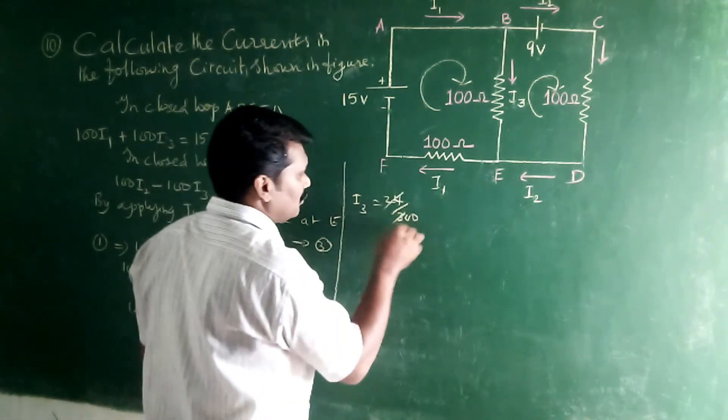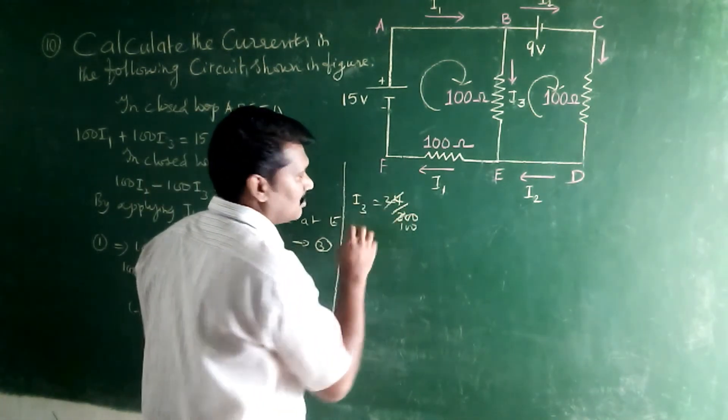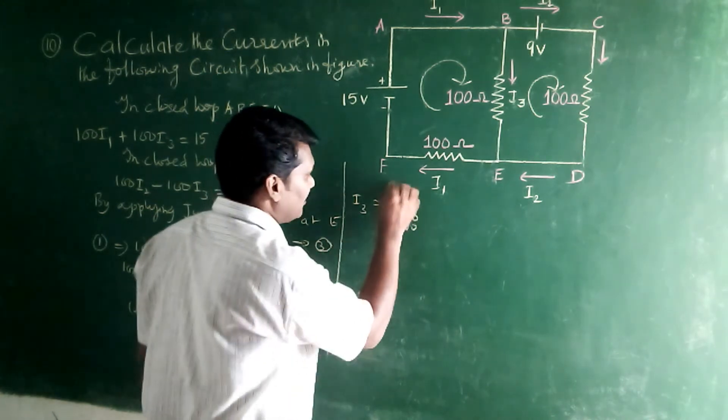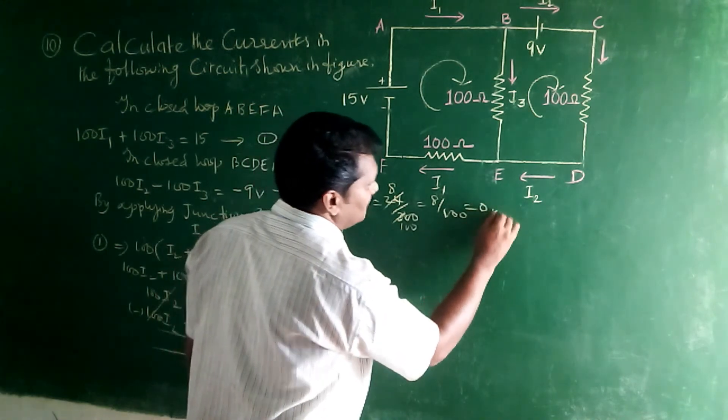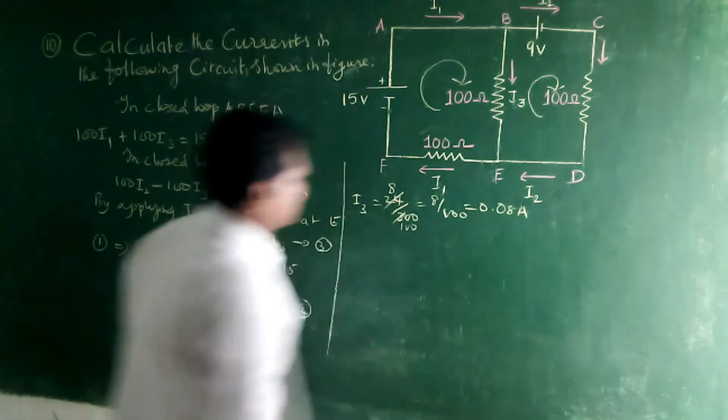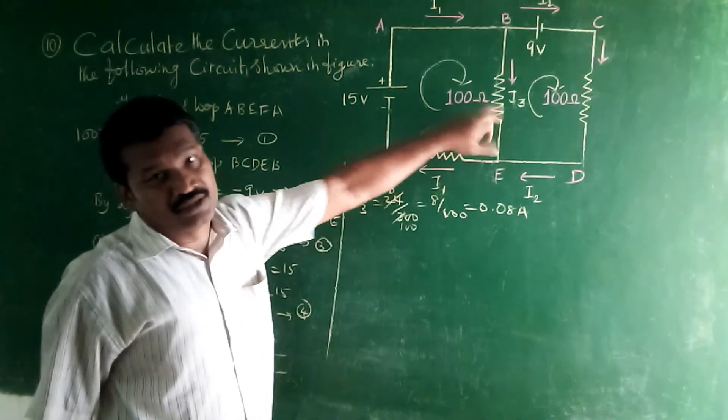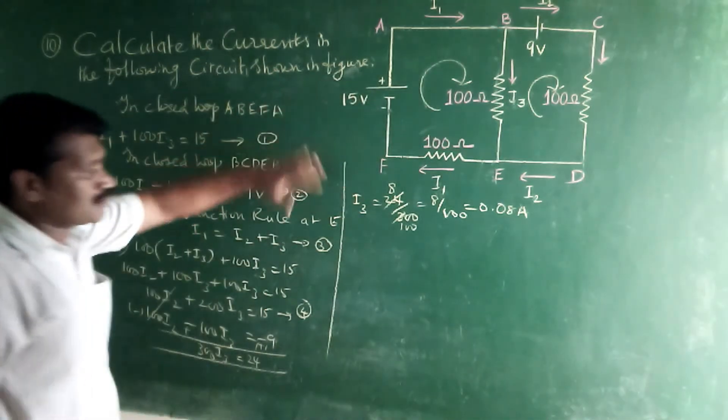So now, 300 I3 equal to 24. I3 equal to 24 by 300. So 8 by 100. You can get 0.08 ampere. So the value of I3 is 0.08 ampere.